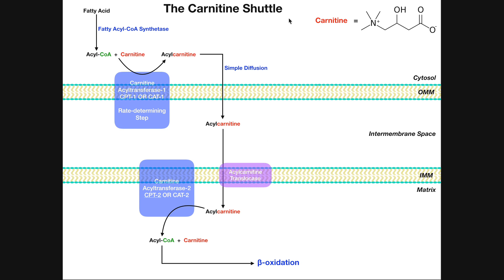So the carnitine shuttle, to put it simply, is basically an indirect method of moving this acyl-CoA from the cytoplasm through three things: through the outer mitochondrial membrane, intermembrane space, and inner mitochondrial membrane, into the matrix of the mitochondria where beta-oxidation can occur. The reason it's indirect is because we don't just simply take the acyl-CoA and move it through. We actually have to swap out its functional group with carnitine, move that through, and then swap out the carnitine back with coenzyme A. And then that gets us into the proper compartment where beta-oxidation occurs.